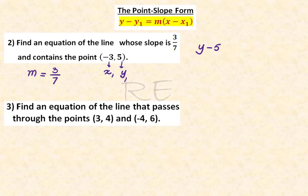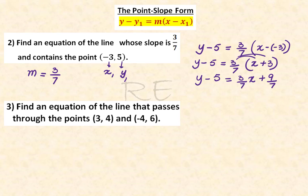Y minus y₁, y minus 5, is equal to m which is 3/7 times x minus negative 3. Y minus 5 is equal to 3 over 7 times x plus 3. Then we are going to distribute 3 over 7 to x plus 3. 3 over 7 times x and 3 times 3 is 9, 9 over 7.